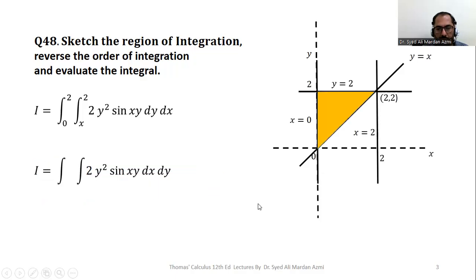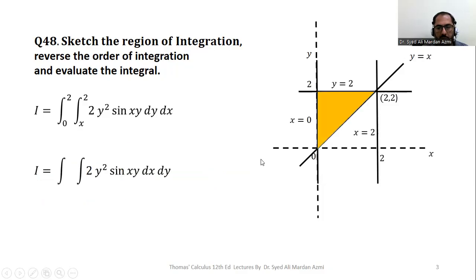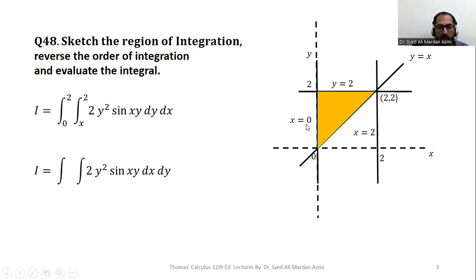In the next step, we highlight our region of integration. Please note that before highlighting, the x-axis is dotted, so we can clearly see that this triangular region is our closed region. Now after the sketching, we have to perform the second step: we have to reverse the order of integration, which means we will interchange our inner and outer variable.